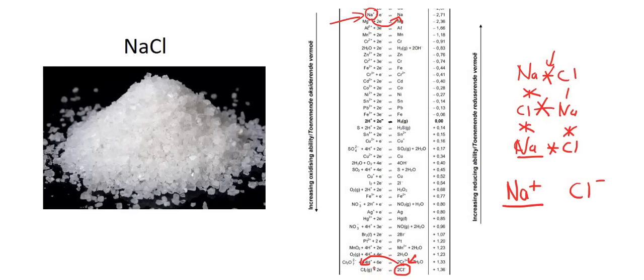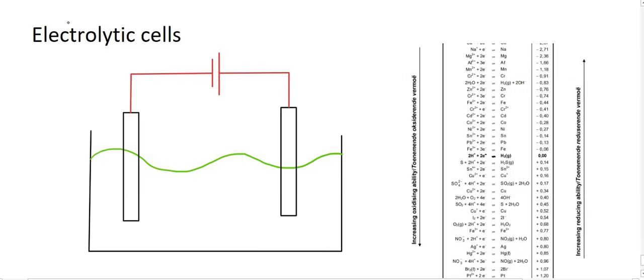However, us as humans, we can solve problems. And so if we can somehow add extra power into the system, we can override the system, and we can cause a reaction to take place. This is why we need electrolysis. Electrolysis gives us the ability to separate things that wouldn't naturally separate by themselves. And so here we go. Here we have an electrolytic cell.